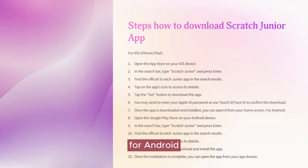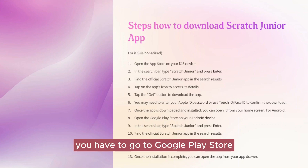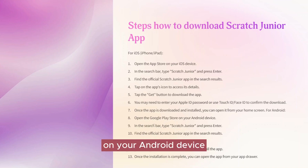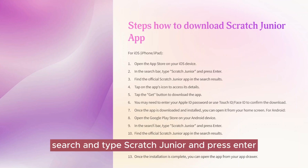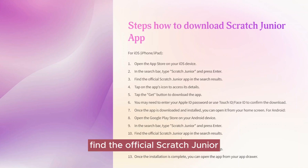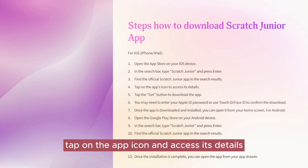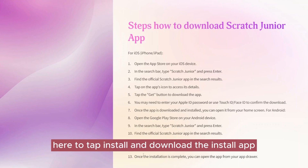For Android, you have to go to the Google Play Store on your Android device. Search and type ScratchJunior and press enter. Find the official ScratchJunior app in the search results, tap on the app's icon to access its details, then tap Install to download and install the app.